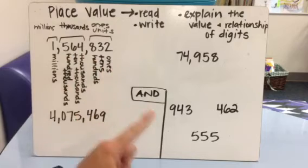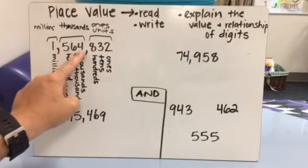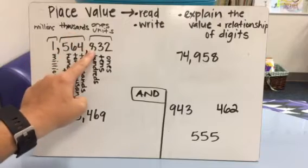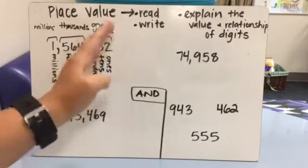So like I said, these periods help us chunk the numbers as we're reading and writing them. So we read that left to right. So we would say 1,564,832. Now you don't say this period when you're ending that.